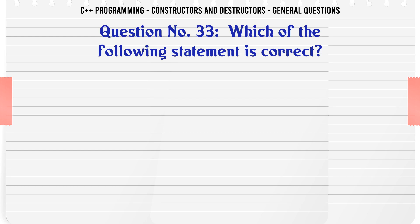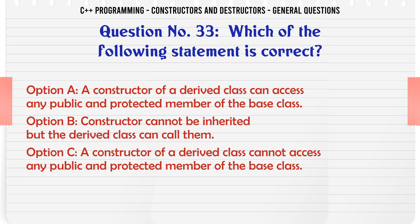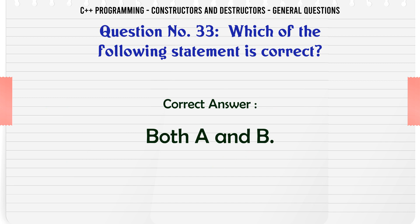Which of the following statements is correct? A. A constructor of a derived class can access any public and protected member of the base class. B. Constructors cannot be inherited but the derived class can call them. C. A constructor of a derived class cannot access any public and protected member of the base class. D. Both A and B. The correct answer is Both A and B.